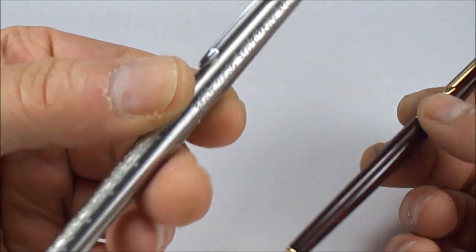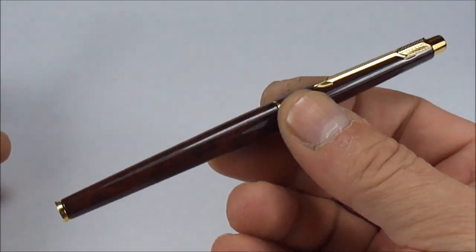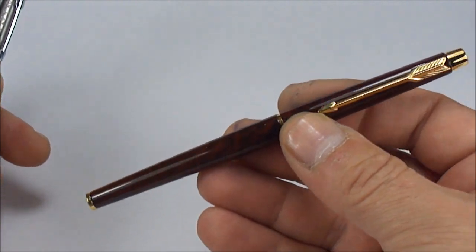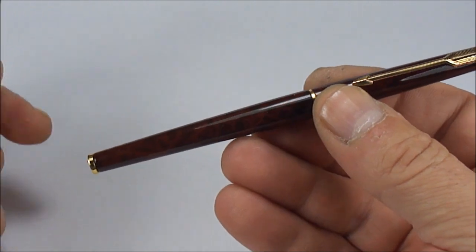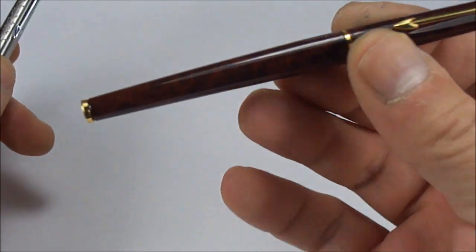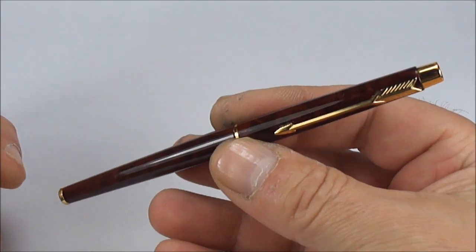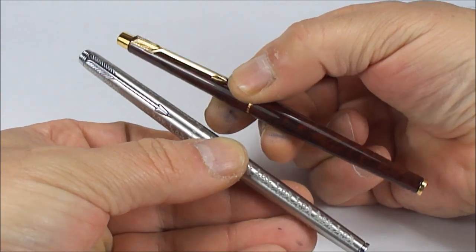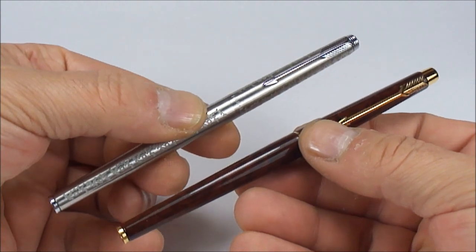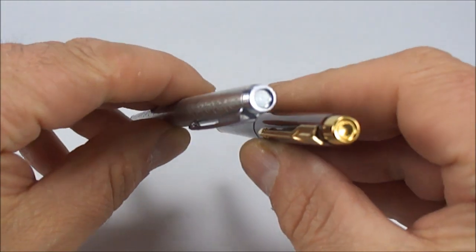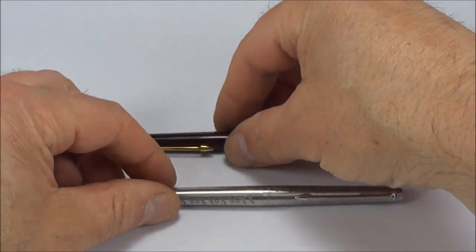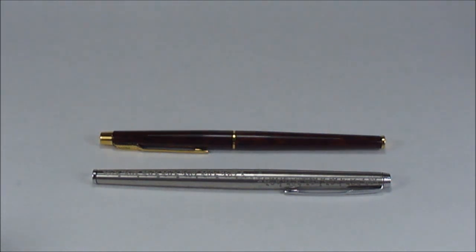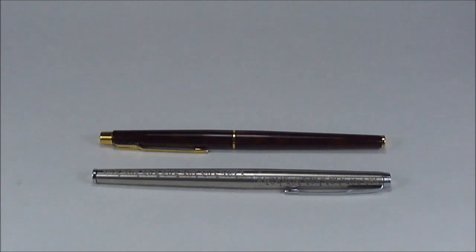So we have the Parker Classic, which started as a ballpoint and pencil from 1967 and later became a fountain pen, and the Parker 180. I hope this helps you distinguish between the two pens and recognize which is which. I hope you've enjoyed looking at these pens as much as I've enjoyed showing them. Don't forget to check out more videos and subscribe. Bye bye!